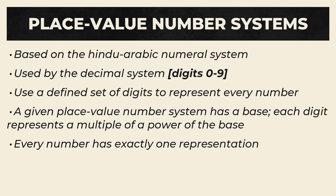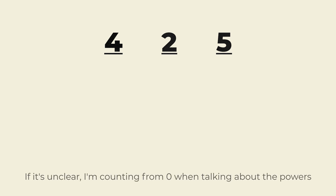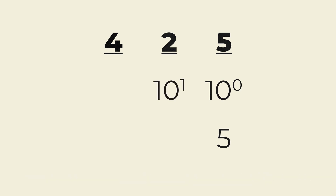To illustrate place value notation, we'll use the example of 425 in base 10, or decimal. 5 is in the 1 spot, because the first power of 10 is 10 to the 0th power, which is 1. 5 times 1 is 5, so 5 gets added to the total for the number. Next is 2. 2 is in the 10 spot, because the second power of 10 is 10 to the first power, which is 10.